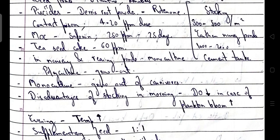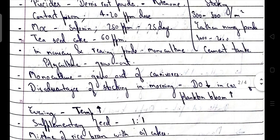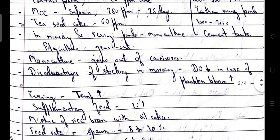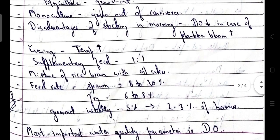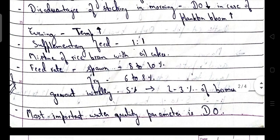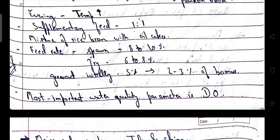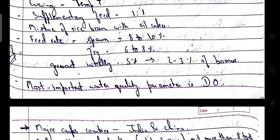Stocking density in earthen nursery ponds is 300 to 500 per m². In cemented tanks it is 1000 to 2000 per m². Disadvantage of stocking in the morning: reduction in dissolved oxygen level due to increase in plankton blooms. Disadvantage of stocking in the evening: rise in temperature. Supplementary feed ratio is 1:1, that is rice bran mixed with oil cakes, i.e. groundnut oil cake. Feeding rate for spawn is 8 to 10%, for fry 6 to 8%, and for grow out initially 5%, later 2 to 3% of biomass.